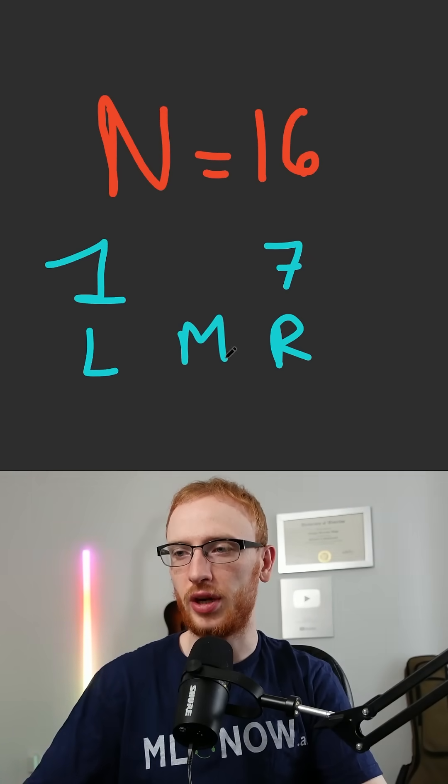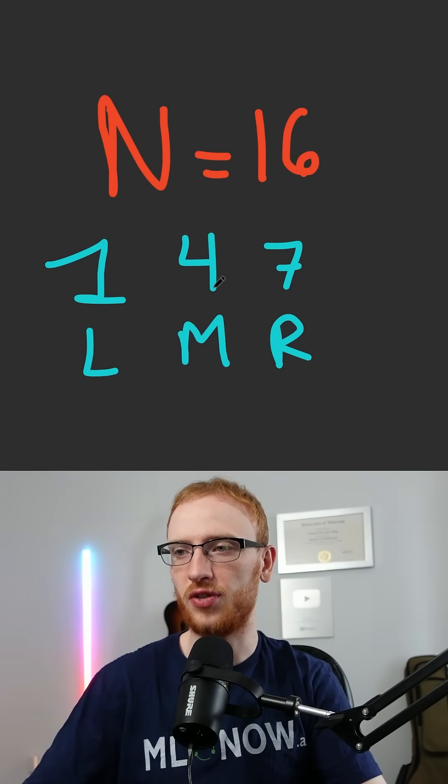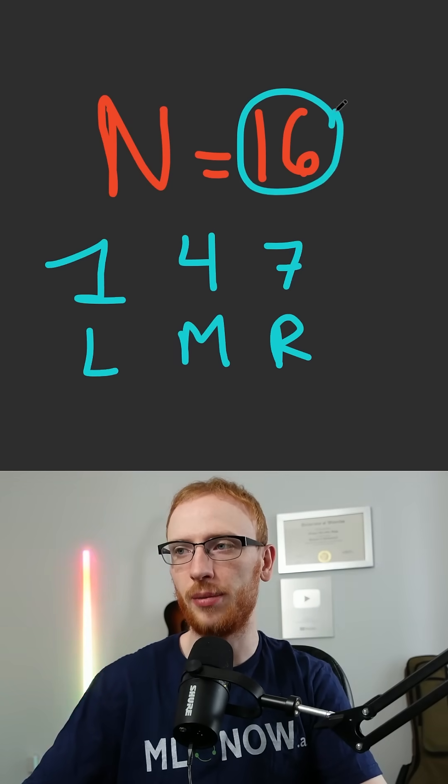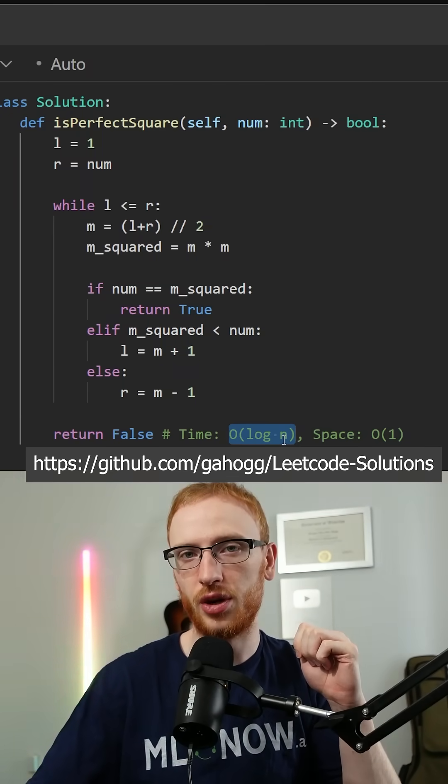On the very second iteration, we'd see that m is equal to 4, and see that 4 squared is equal to our number. Check this repository for the code.